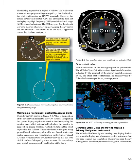Failure indications on the moving map can be quite subtle. The MFD in Figure 5-9 reflects a loss of position information, indicated by the removal of the aircraft's symbol, compass labels, and other subtle differences. Be familiar with the failure indications specific to your equipment. Common error — using the moving map as a primary navigation instrument: the rich detail offered by the moving map display invites you to use the display as a primary navigation instrument, but you need to resist this temptation.